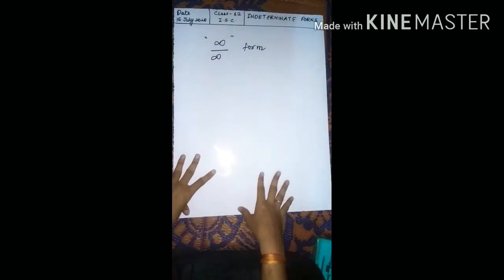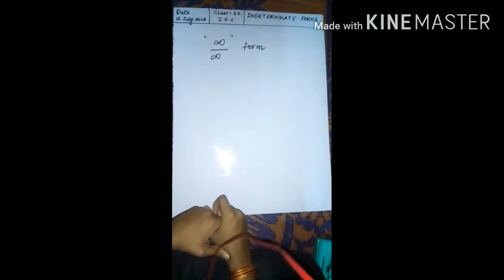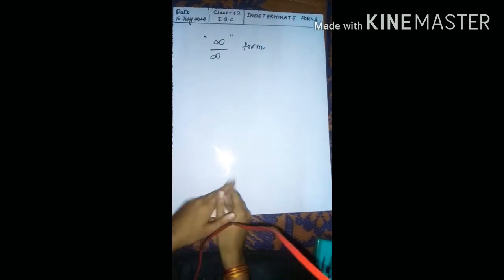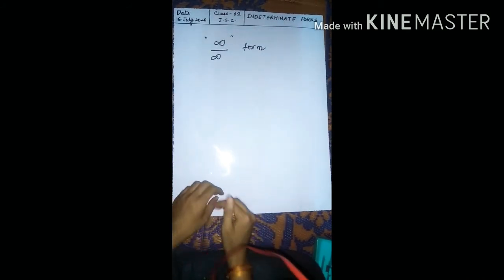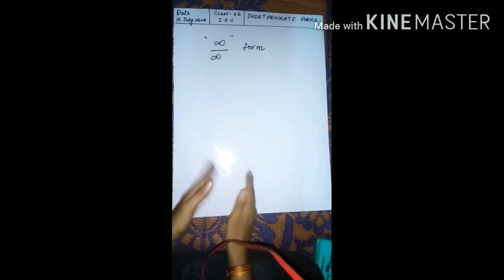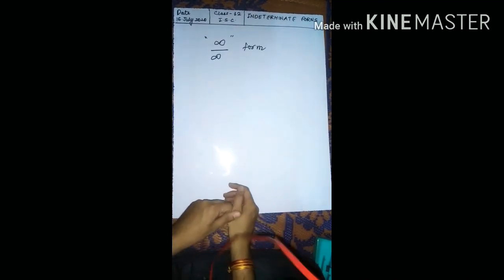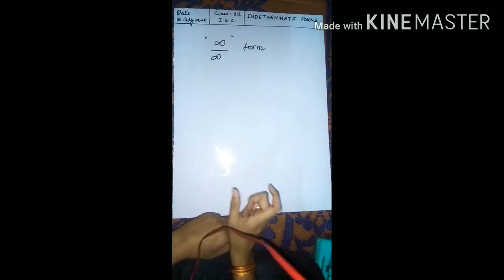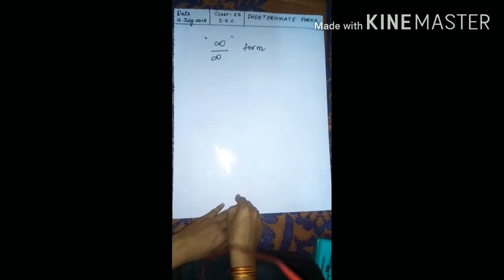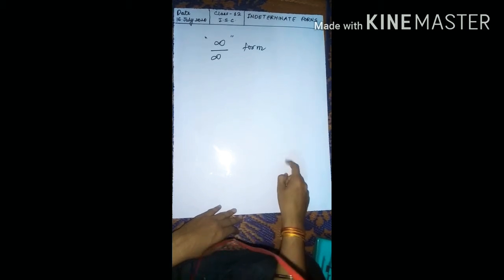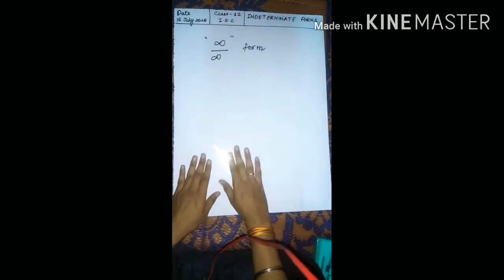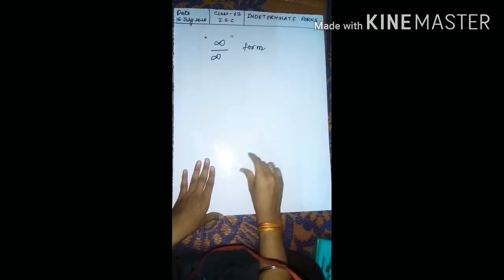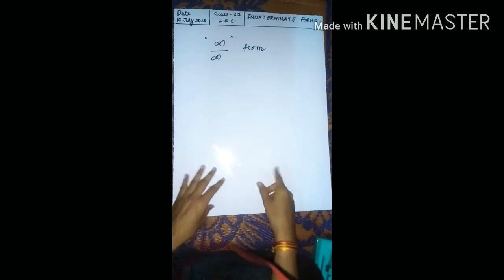Good morning dear students. In the last lecture we saw indeterminate forms and explained which questions we would cover and which rule we would use — that is L'Hôpital's rule. We use L'Hôpital's rule when we have an indeterminate form: 0/0, ∞/∞, 0^∞, 1^∞, or 0⁰. We already discussed the 0/0 form. Now we are going to discuss the ∞/∞ form and see questions related to it.